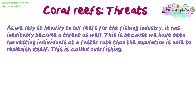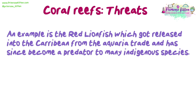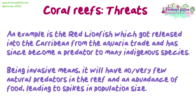As we rely so heavily on our reefs for the fishing industry, it has inevitably become a threat as well. We have been harvesting individuals at a faster rate than the population is able to replenish itself — this is called overfishing. Not only does this affect the species we are fishing, but also those that rely on them as a food source or habitat, meaning their populations will also decline. We are also seeing introduced species from ballast water, fish farming and the aquarium trade becoming an issue. There are lots of examples where they have become invasive, either as a predator or competitor, and dwindled the populations of native species. An example is the red lionfish, which was released into the Caribbean from the aquarium trade and has since become a predator to many indigenous species. Being invasive means it will have no or very few natural predators in the reef and an abundance of food, leading to spikes in population size.